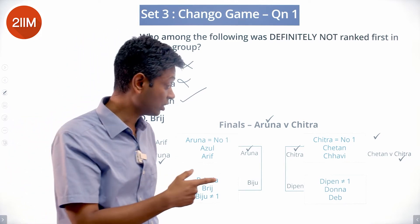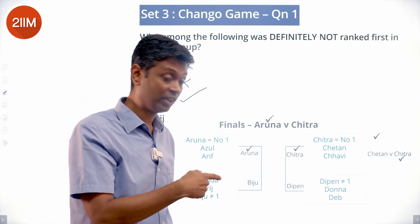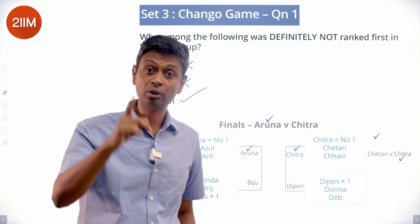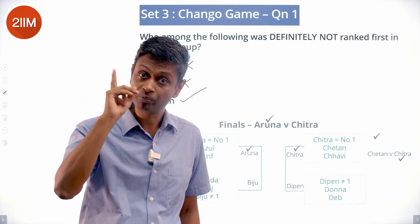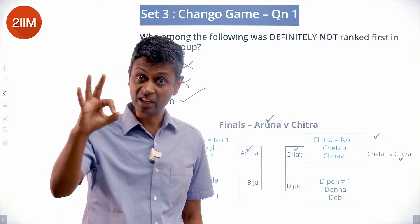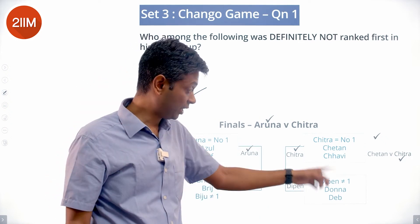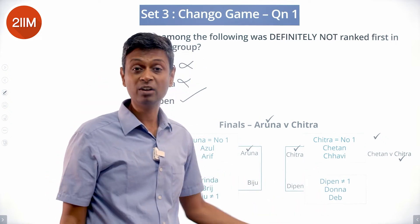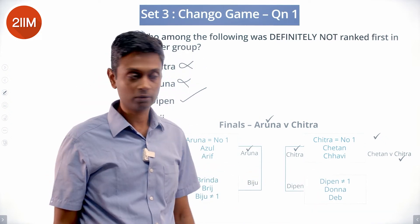If Dipen had been ranked first, he would have only played one group game, making the semi-final his second game. But since he played three games total, he must have played two group games before the semi-final, confirming he was not the top seed.